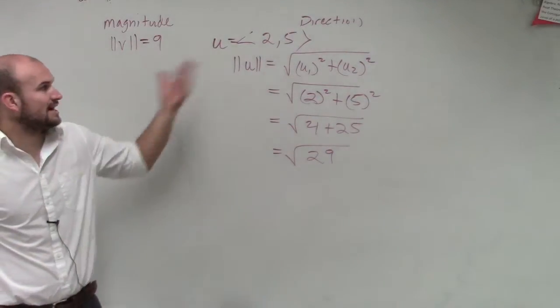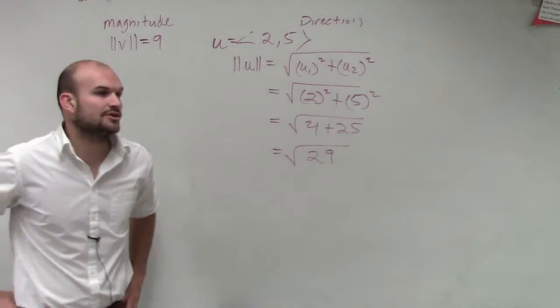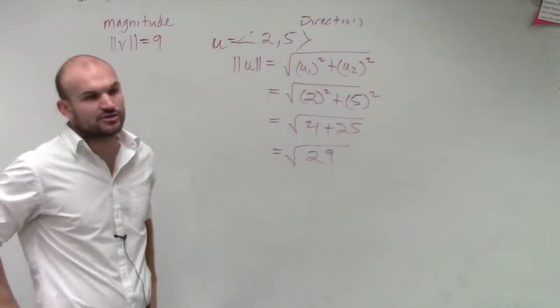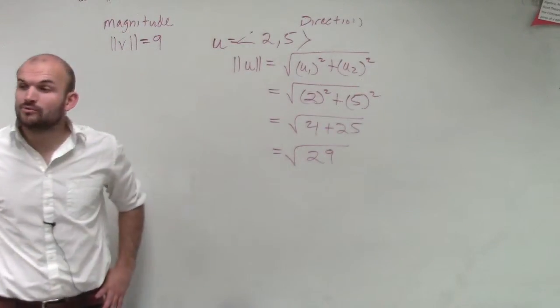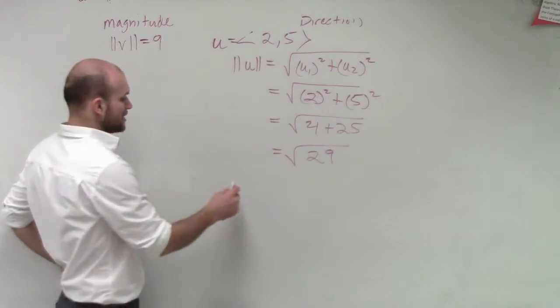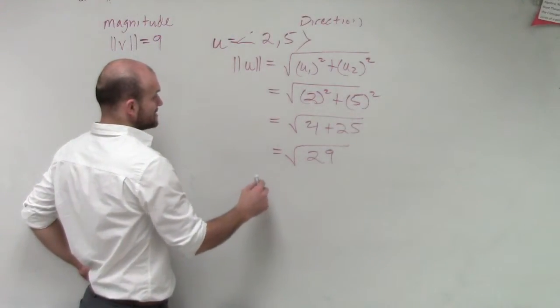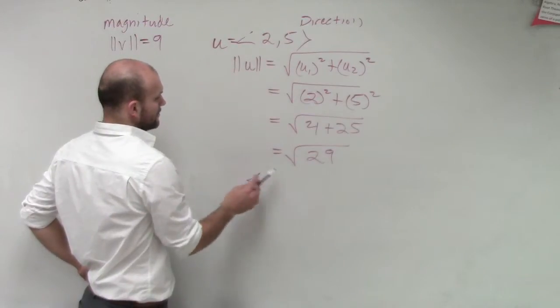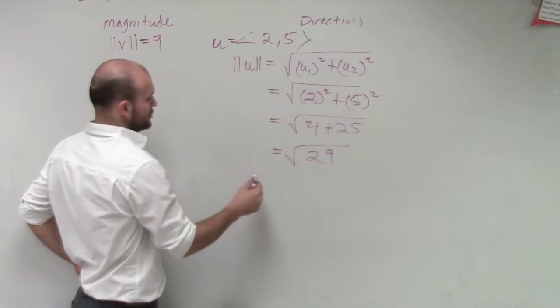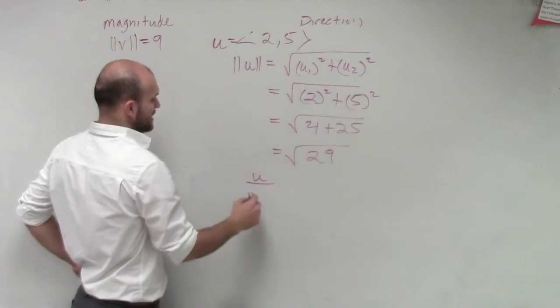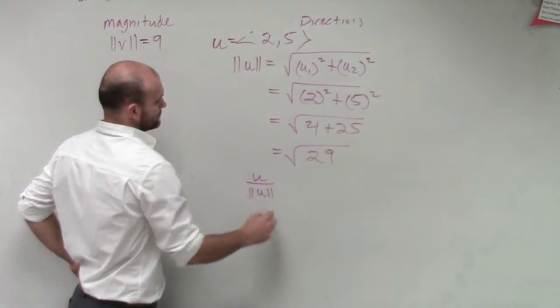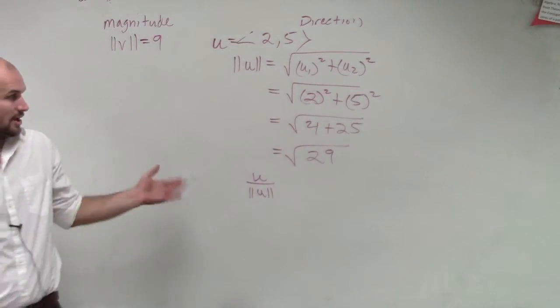Now we know that this vector is not a unit vector because it has a magnitude of √29, which we cannot simplify. So how do we write it as a unit vector? Remember, a unit vector is written as u divided by the magnitude of u.